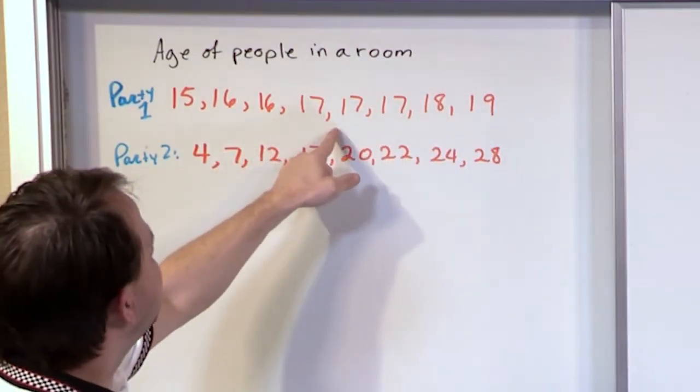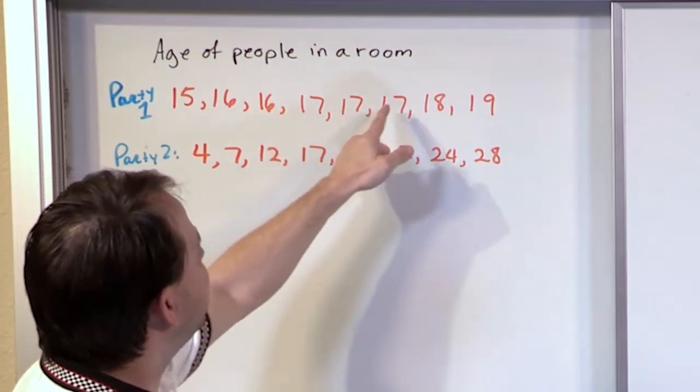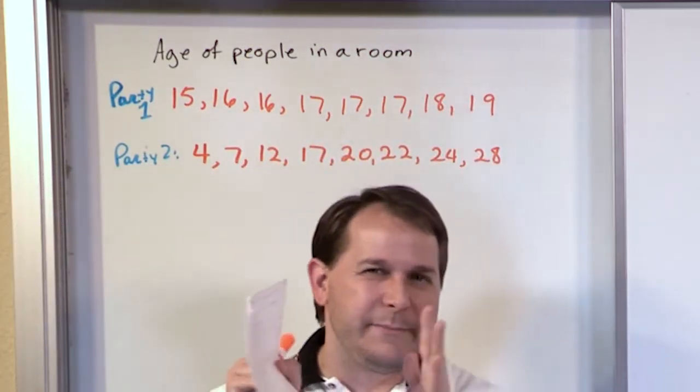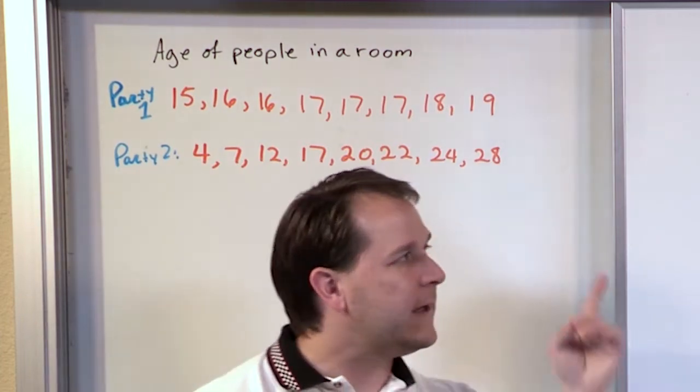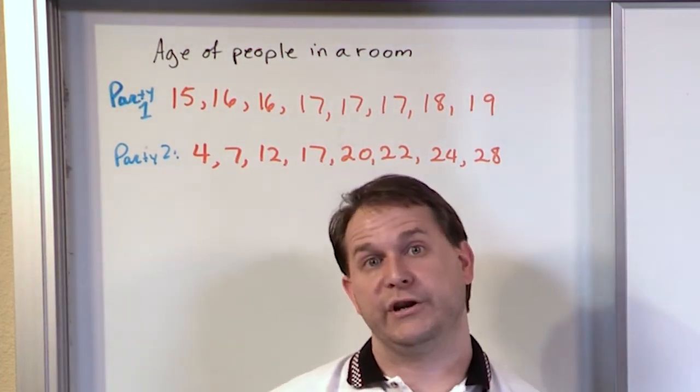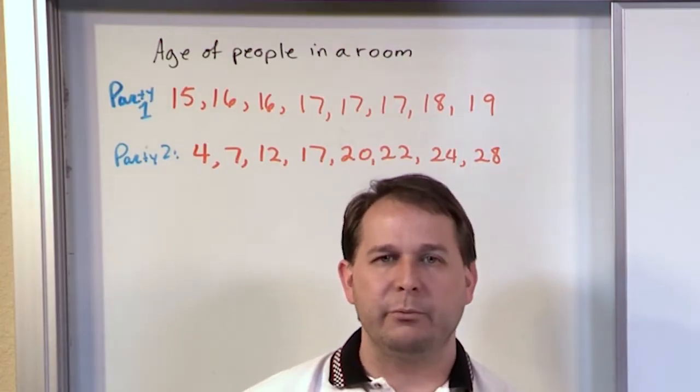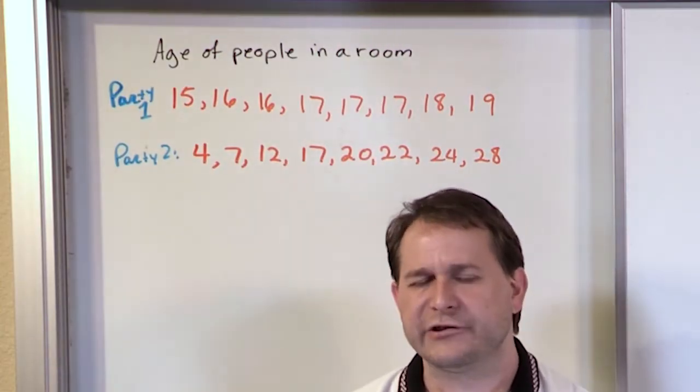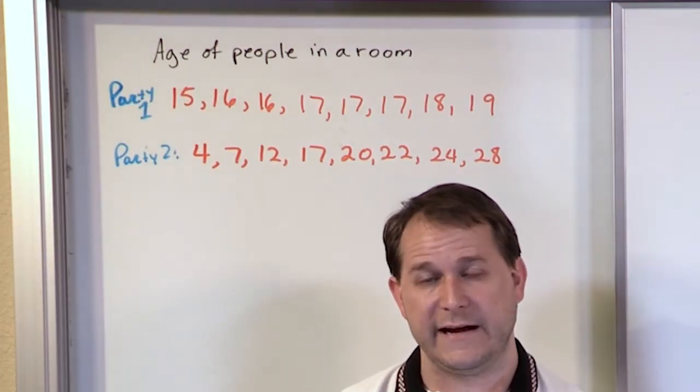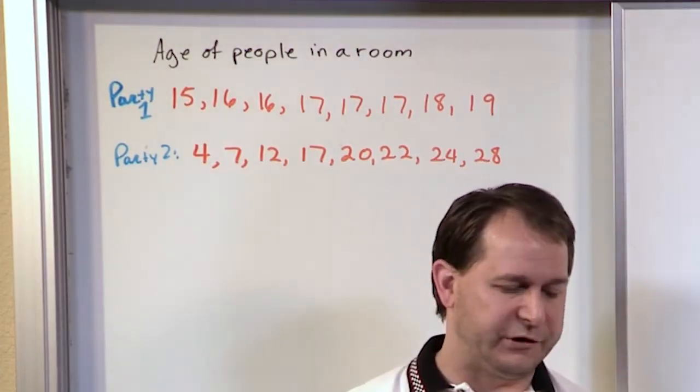Because if I had to calculate the mean of this, which I'm not going to do now, but if I did, the mean probably would be around 17 or so. And I've got some people slightly below 17 and some people slightly above 17, but it seems to be more compressed. It seems to be more tightly grouped about the mean in party number 1 than party number 2.